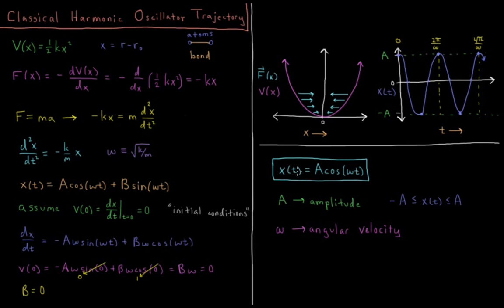X(t) is going to equal A cos(ωt). A is what we refer to as the amplitude of our function. Wherever we start out, that's the amplitude. That's the maximum value that our displacement gets to. X is going to oscillate between minus A and A. And ω, in cosine ωt, is what is referred to as the angular velocity of this function.